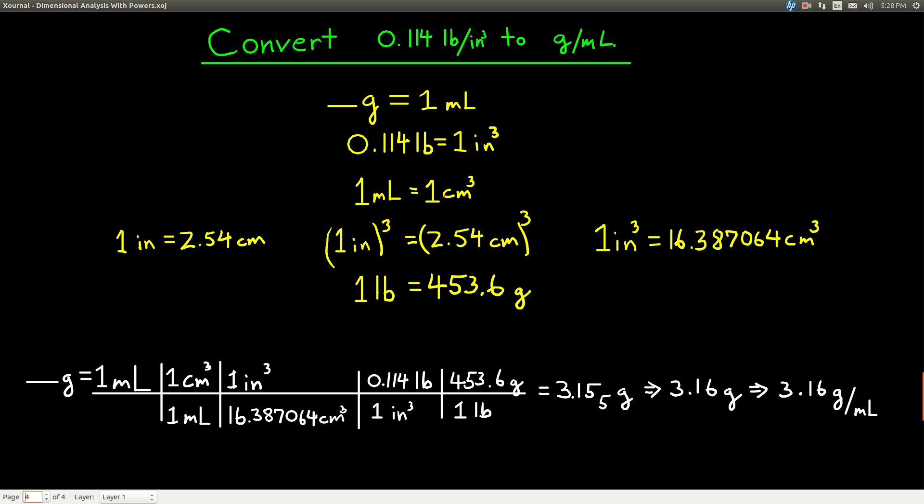Then we say I know that's good, but I want to get to inches cubed. I know that 1 inch = 2.54 centimeters, but that's not cubed, so that's fine. We just cube both sides. Cube this, cube that, and I end up with 1 in³ = 16.387064 cm³.